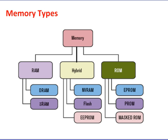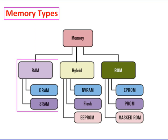This video talks about types of memory used in embedded systems. The RAM family includes two important memory devices: static RAM (SRAM) and dynamic RAM (DRAM). The primary difference between them is the lifetime of the data they store.